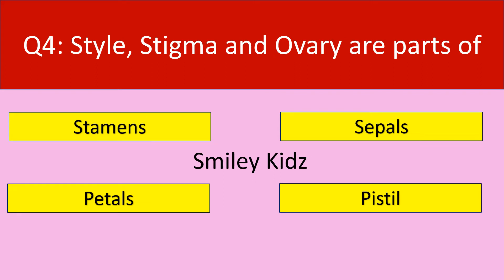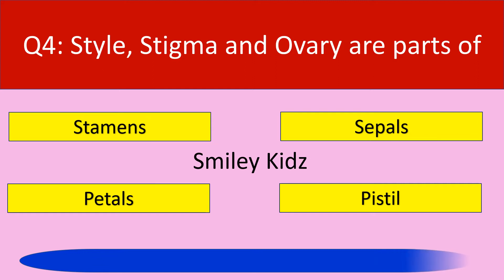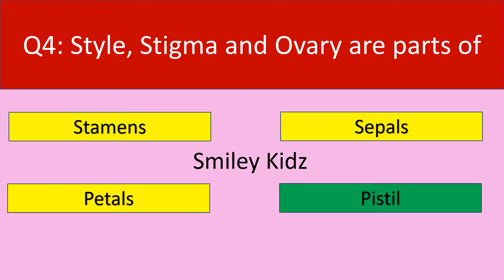Question number 4. Style, stigma and ovary are parts of. Options are: stamens, sepals, petals, pistil. Your time starts now. Your time is up. The correct answer is pistil. Style, stigma and ovary are parts of pistil.